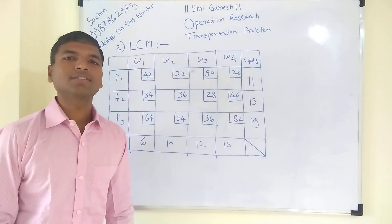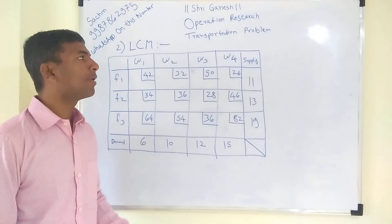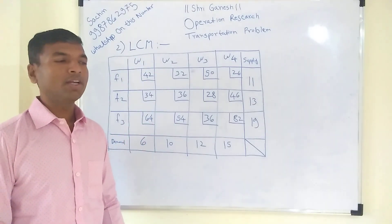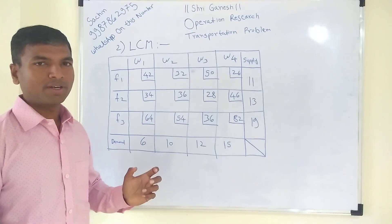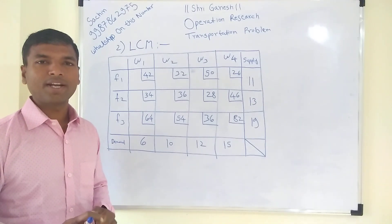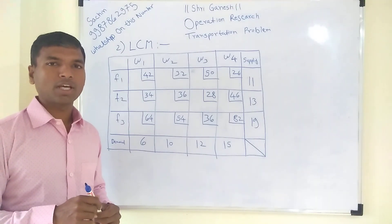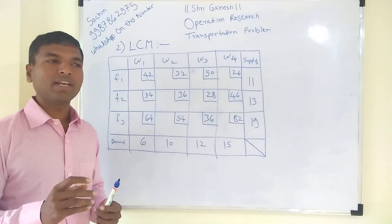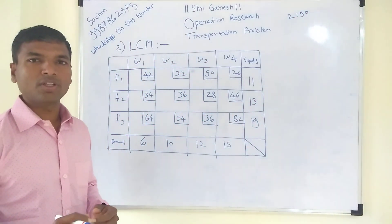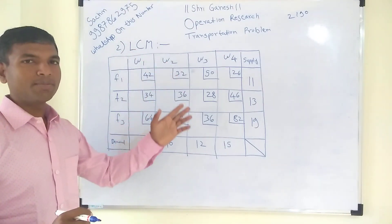Welcome to the Operations Research class. We are going to learn the transportation problem and solve it with the LCM method — LCM stands for Least Cost Method. The Least Cost Method finds the lowest cost for transportation. It is a slightly advanced version of NWCR, and the transportation cost you get with LCM is always lesser than with NWCR. Previously, we got a transportation cost of 2190 using NWCR. Now we'll solve the same problem using LCM.